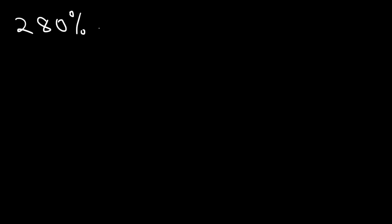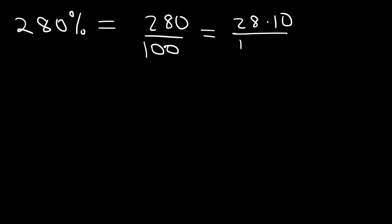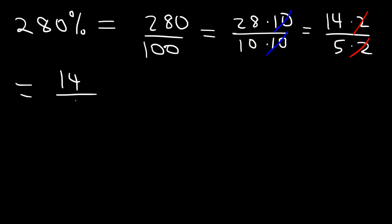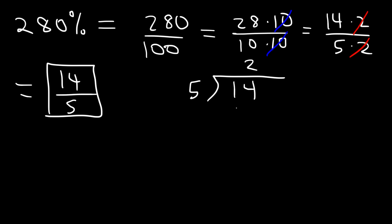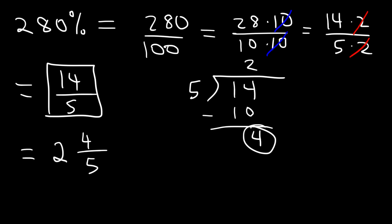Go ahead and try this one for practice: convert 280% into an improper fraction and a mixed number. So let's divide it by 100. 280 is 28 times 10, and 100 is 10 times 10. 28 is 14 times 2, and 10 is 5 times 2. Therefore, our answer as a reduced improper fraction is 14 over 5. Now let's convert that into a mixed number using long division. 5 goes into 14 two times. 5 times 2 is 10, and 14 minus 10 is 4. So the whole number is 2, the remainder 4 is the numerator, and 5 remains the denominator. So 14 over 5 is 2 and 4 fifths as a mixed number, which equates to 280%.